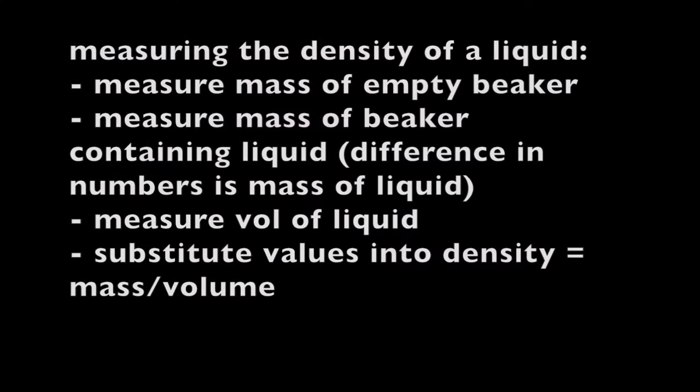If you're asked to calculate the density of a liquid, you work out its volume using the measuring cylinder — that's nice and straightforward. Then you measure the mass of the measuring cylinder without any liquid in it, then with the liquid in it, and the difference between those two numbers will be the mass of liquid. That's the experimental approach to measuring density.